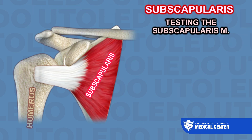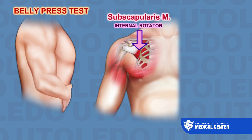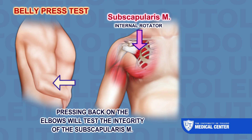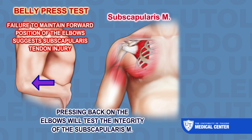Testing the subscapularis muscle: two common tests used to assess its integrity are the belly press test and the liftoff test. The belly press test is often used as an alternative to the liftoff test. Since the subscapularis is an internal rotator, have the patient place their hand on their abdomen; pressing back on the elbow will test the integrity of the subscapularis muscle. Failure to maintain a forward position of the elbow suggests a subscapularis tendon injury.